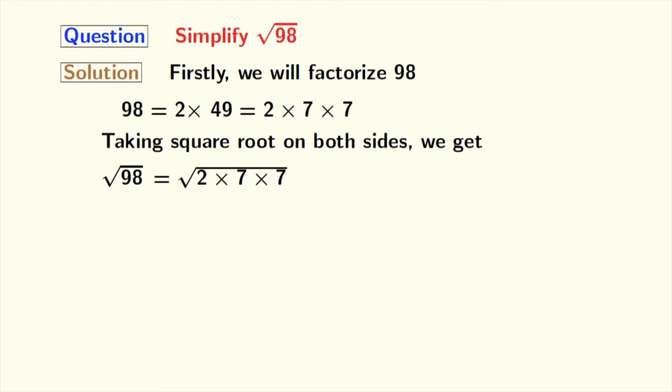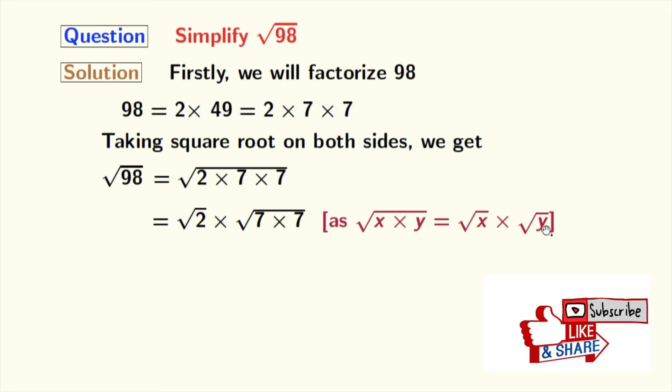Now, after grouping, we get square root of 2 times square root of 7 times 7. Here we have used the rule that square root of x times y equals square root of x times square root of y. Here, x is 2 and y is 7 times 7.